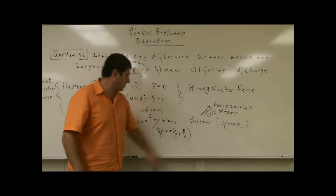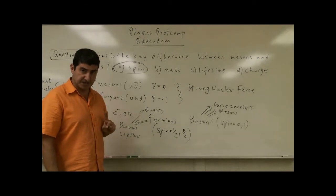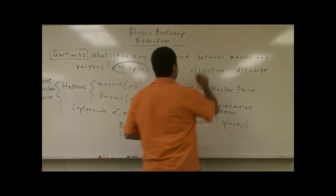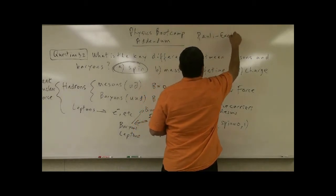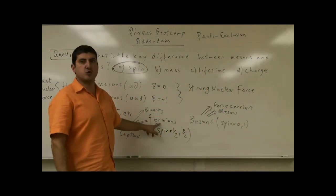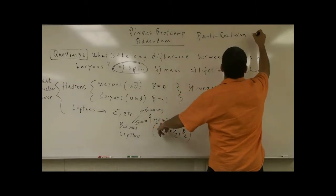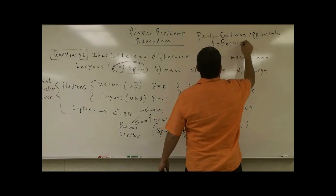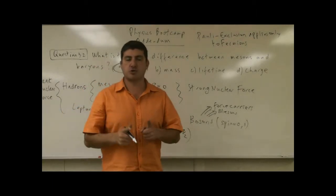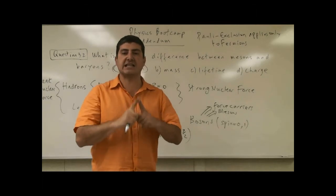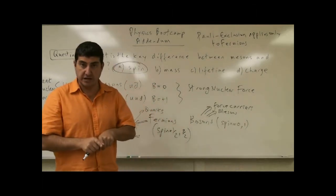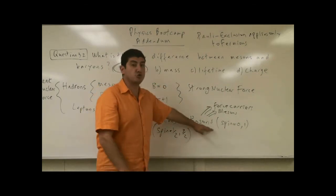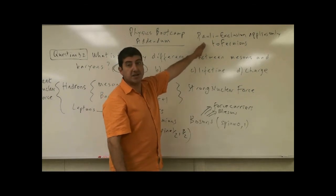Now, what is so crucial about the difference between a boson and a fermion? This following statement. Boson, which has a spin of zero, does not have to follow the Pauli exclusion principle. The Pauli exclusion principle. Fermions have to obey the Pauli exclusion principle. So Pauli exclusion principle applies only to fermions.